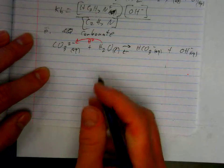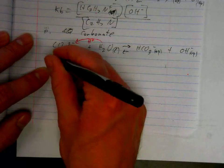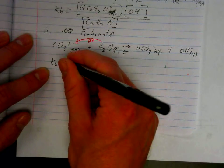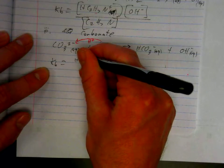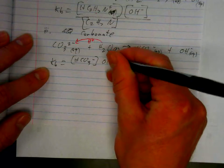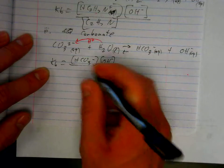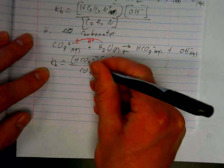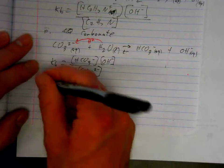So now we write the expression. Kb, since we have a base, is HCO3 minus times OH minus all over CO3 two minus. And one more example.